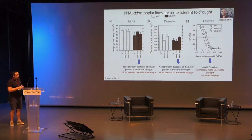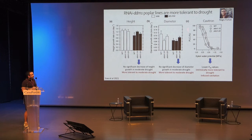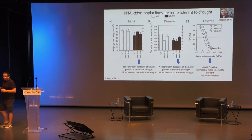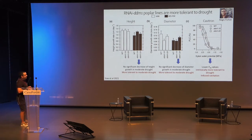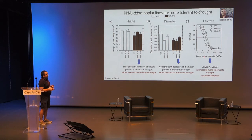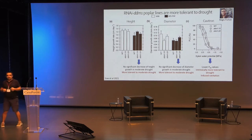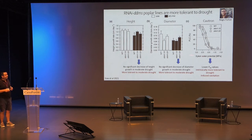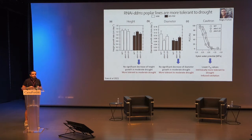We were surprised because we expected a defect in response in this line rather than a gain of function for tolerance. So we did complementary experiments on the cavitron — a way to analyze the cavitation potential of trees. In these curves you can see the P50 value; the more negative the value, the more tolerant the tree is to severe drought condition, because it mimics cavitation. As you can see, we confirm that naturally our RNAi lines are more tolerant to severe drought condition.